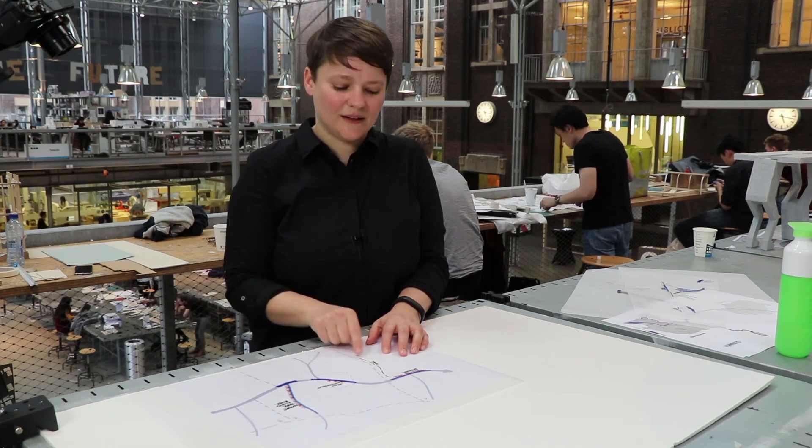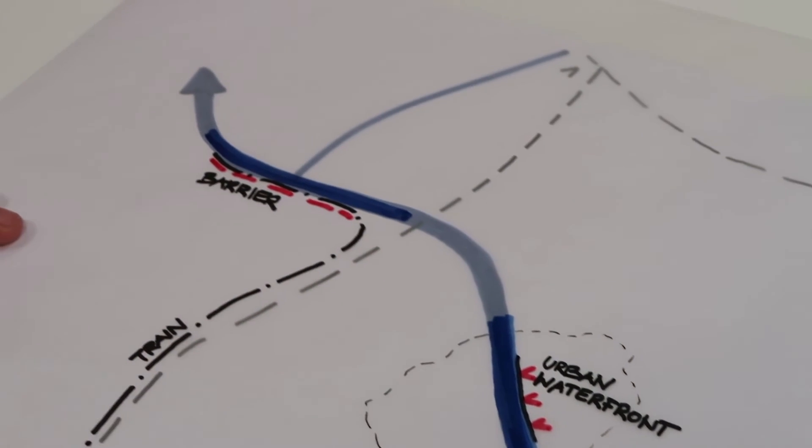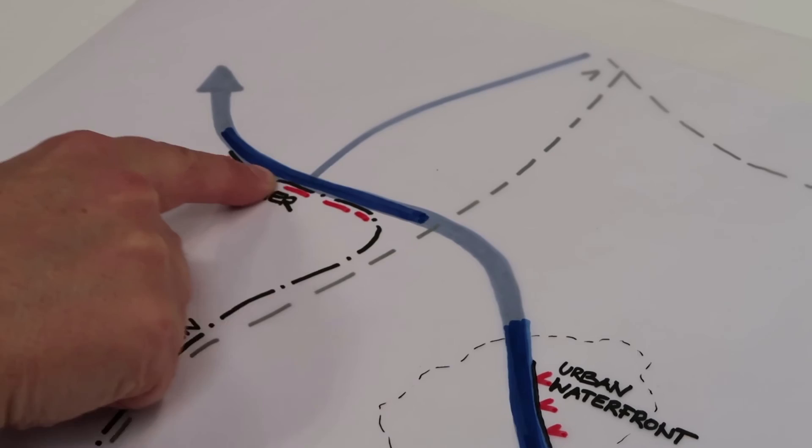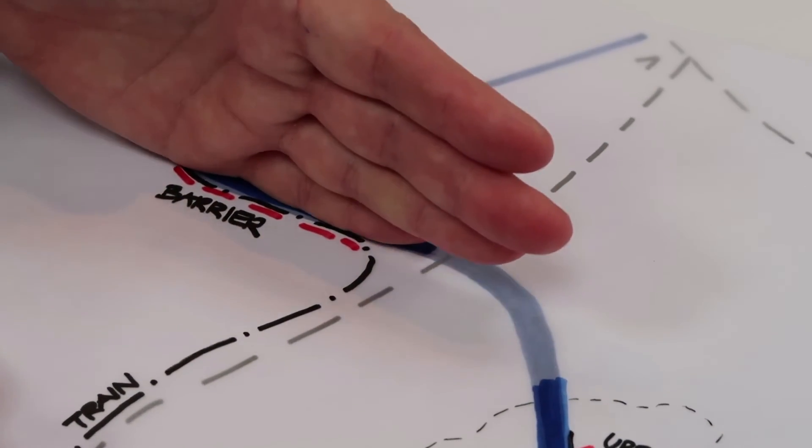In a negative case, like the third case here, we can see that the train infrastructure is bundled with the main river flow, which can create a very strong barrier, which basically prohibits that we can access the water.